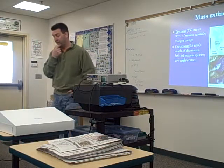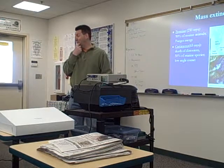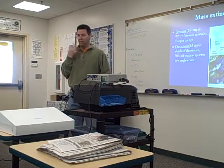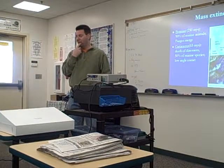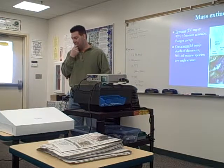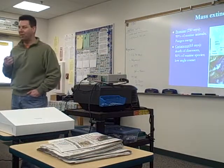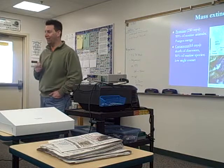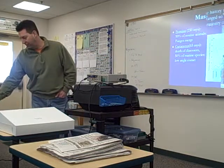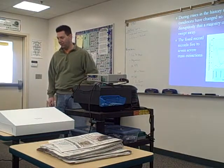Some mass extinctions: the Permian extinction saw 90% of marine animals disappear. Then there's the Cretaceous extinction, 65 million years ago, where the dinosaurs died along with about 50% of marine species. The idea was that it was a comet that caused it, but researchers are still looking at all those different factors.